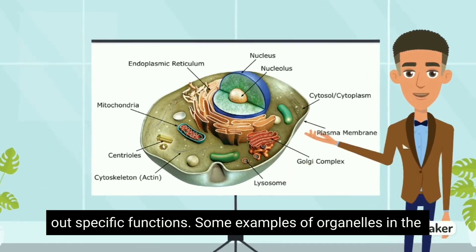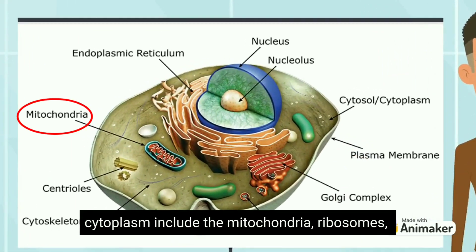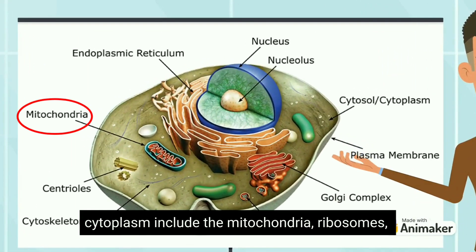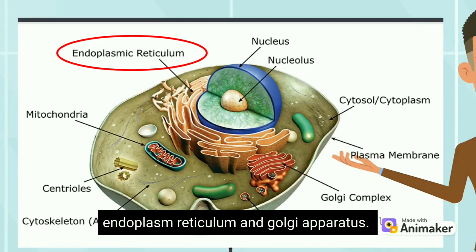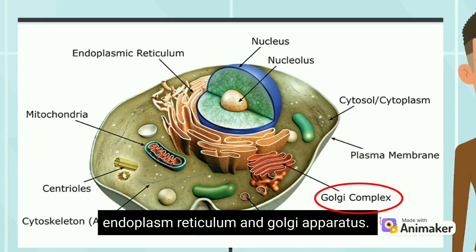Some examples of organelles in the cytoplasm include the mitochondria, ribosomes, endoplasmic reticulum, and Golgi apparatus.